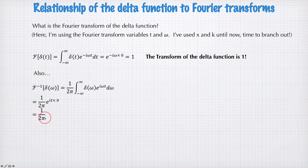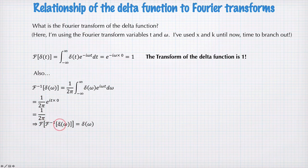Now there's a little bit more we can do here to discover something interesting. If we write down the Fourier transform of the inverse Fourier transform of delta omega, we must get delta omega back again because we take the inverse transform and then the transform.